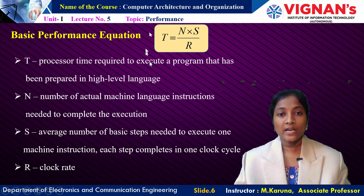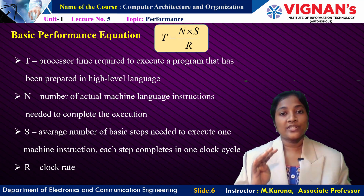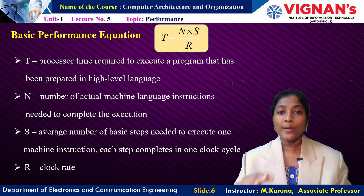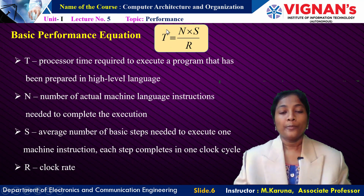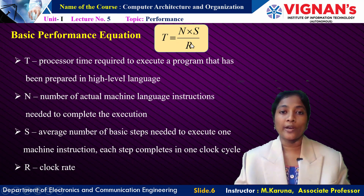This is the performance equation: T is the execution time of the program, N is the number of actual instructions in the program, S is the number of sequential steps required to perform one instruction — such as fetching, decoding, and executing the instruction. Execution time T can be reduced by reducing N, reducing S, and by increasing the clock rate R, so that better performance of the system can be achieved.